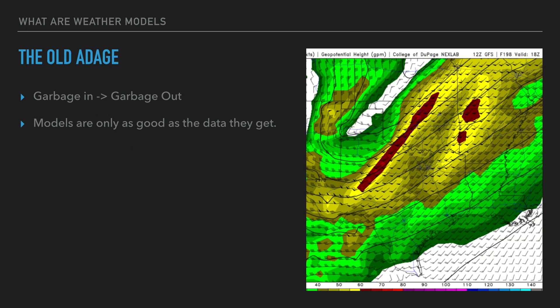This is the old adage — garbage in, garbage out. If you get really bad starting data, say there's data missing or you get some erroneous data — any number of things, you see this oftentimes in the spring — you have to take this into account. If you get bad data in, you're going to get bad output. You're not going to get an accurate representation. So just keep that in mind when you're looking at models.